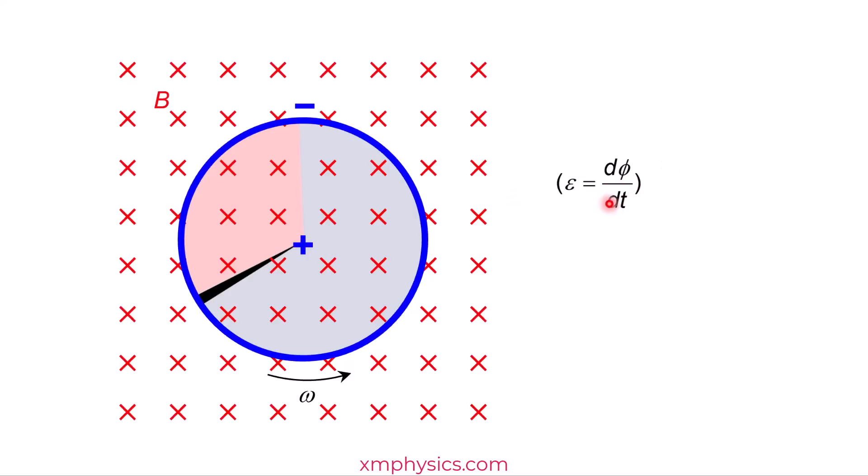So from Faraday's law, induced EMF is dφ/dt. So you can write induced EMF is B(πr²) divided by T. Do you understand where this comes from? Because this wire is going to sweep out this circular area in one period. Can you imagine this wire? After it has rotated one round, it has swept out one circular area.